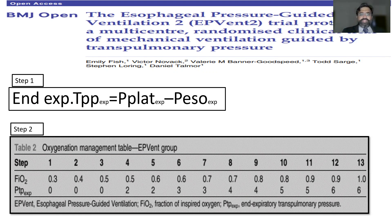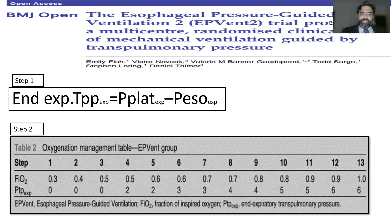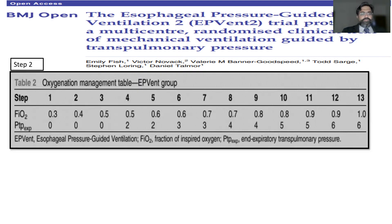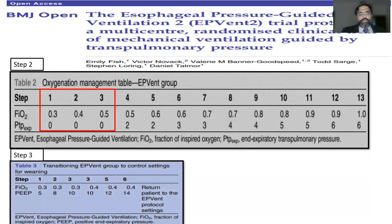In our ICU, we look at the end-expiratory transpulmonary pressure — that is PEEP minus esophageal pressure at expiration — and we ensure it meets targets based on the FiO2. For example, if FiO2 is 0.7, we aim to keep end-expiratory transpulmonary pressure at around 3, achieved by increasing PEEP. Once the patient is weaned to FiO2 of 0.3 or 0.4 and transpulmonary pressure reaches 0, we begin weaning by reducing PEEP — for instance, targeting PEEP of 8 and gradually reducing to 5. That is how we titrate both upward and downward in these patients.